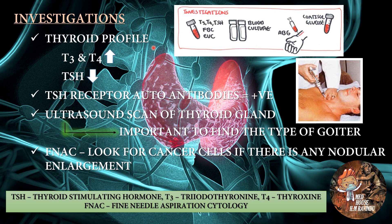Next we are going to talk about the investigations for hyperthyroidism. For a patient who has the clinical features we talked about, we have to do a thyroid profile. In the thyroid profile we can see T3 and T4 hormone levels are increased, and TSH, or thyroid stimulating hormone, levels are decreased. If hyperthyroidism is caused by Graves' disease, we can see TSH receptor autoantibodies are positive. We can also do an ultrasound scan of the thyroid gland, which is important to find the type of goiter. If there is any nodular enlargement, we can do a FNAC test to look for cancer cells. FNAC stands for fine needle aspiration cytology.